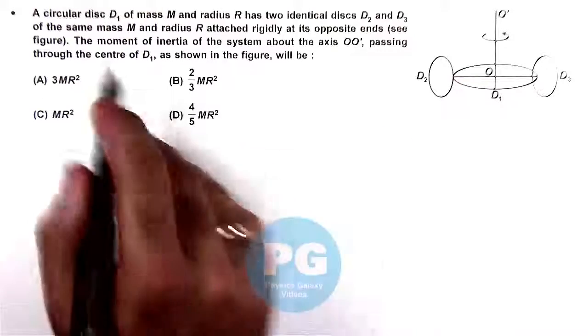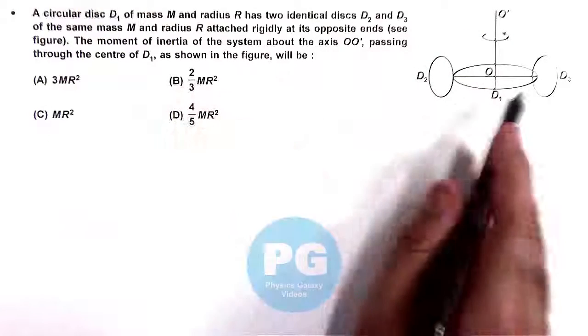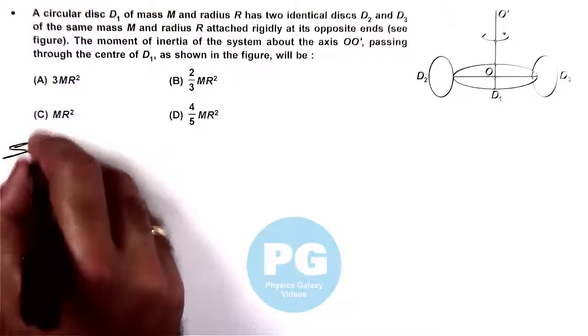And we are required to find the moment of inertia of this system about the axis OO' passing through the center D1. So here in solution,